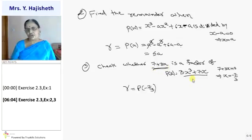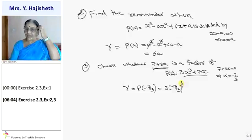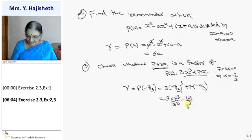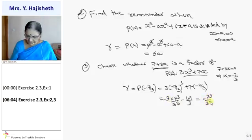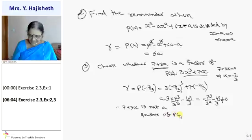Evaluating: 3 × (−343/27) + 7 × (−7/3) = −343/9 − 49/3. This is not equal to 0, so 7 + 3x is not a factor of p(x).